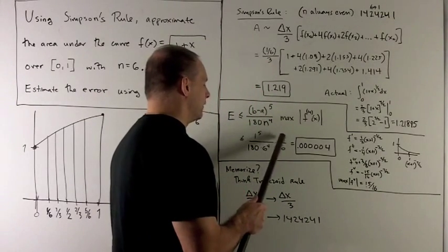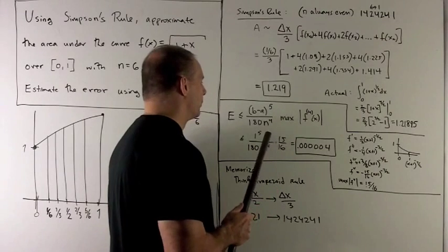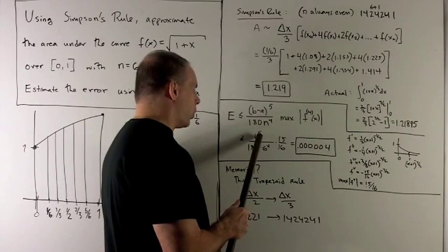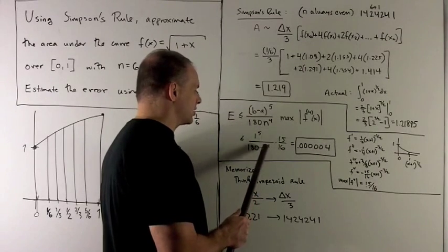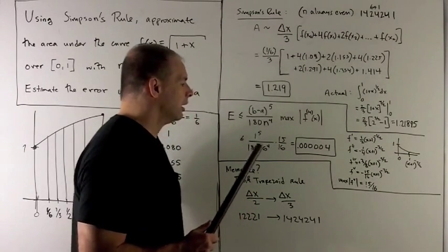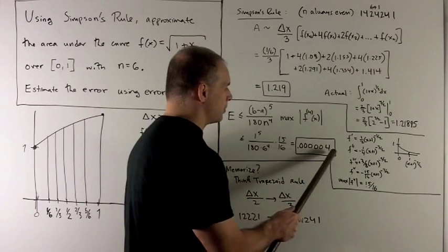Okay, plug things in. 15 sixteenths is our max. The length of the interval is just 1. We have our 180, and then I'm going to take my n equal to 6, raise that to the 4th power, and then we get this incredibly small number,